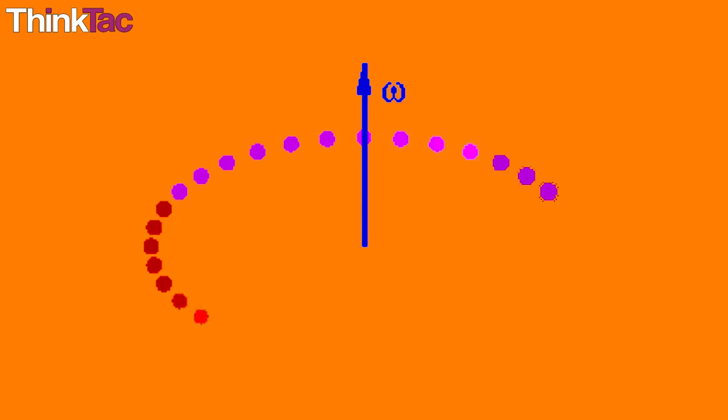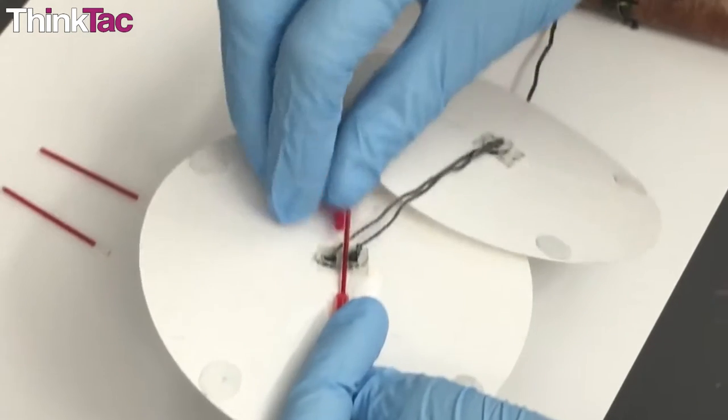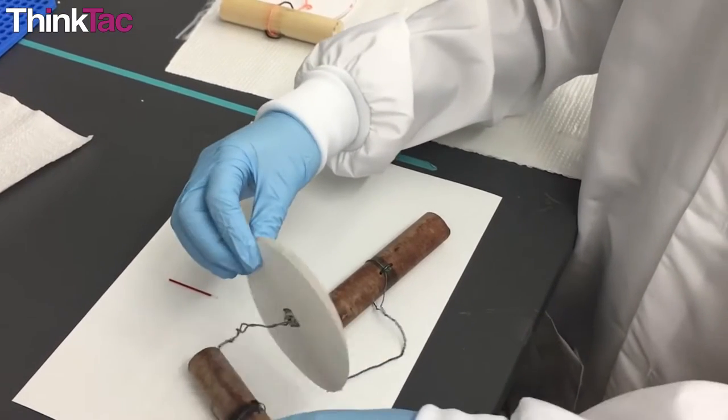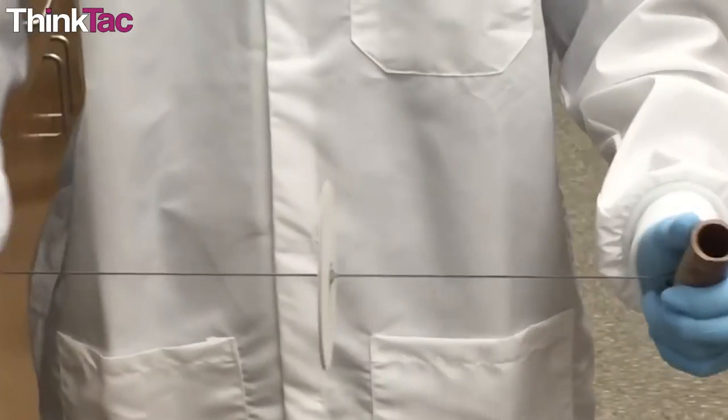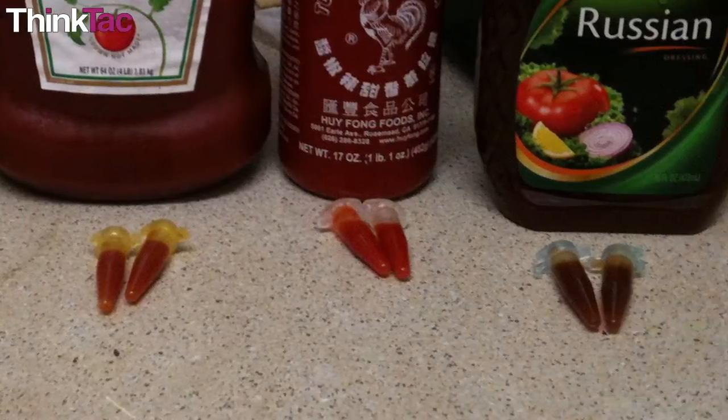Another thing you should experiment with is the angular speed. Try to come up with a model that spins faster than the original. Let us know what you come up with. You can also try different experiments.